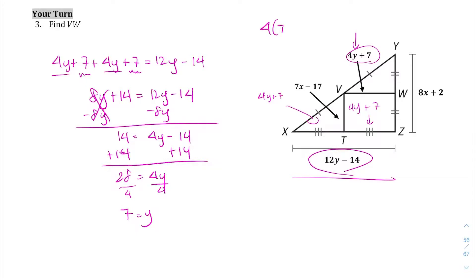So 4 times 7 plus 7, this is going to be 28 plus 7, which is 35. So VW is going to equal 35. Hopefully that made sense to you.